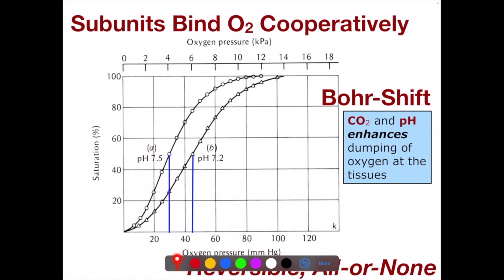The high affinity curve only requires about 30 millimeters of mercury of oxygen, or about 4 kPa, to be 50% saturated. Whereas the acidified, lower affinity curve requires about 45 millimeters of mercury, or 6 kPa, of oxygen to be 50% saturated. That's why it has a lower affinity for oxygen — you need more of it in order to have half the hemoglobins bound.